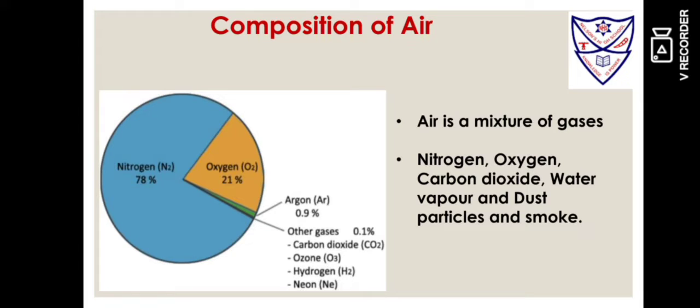Composition of Air. Till the 18th century, people thought that air was just one substance. The experiments prove that air is a mixture of many gases. Students, the major components of air are nitrogen, 78%, and oxygen, 21%.